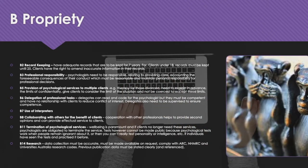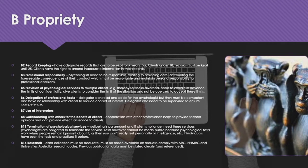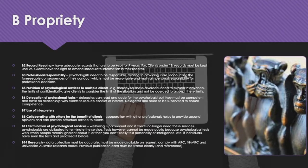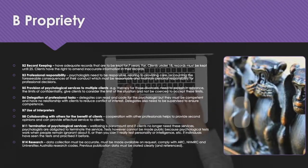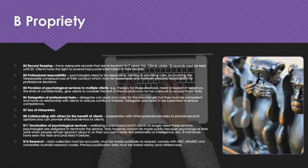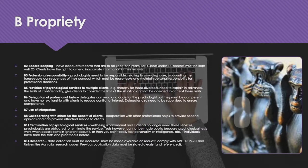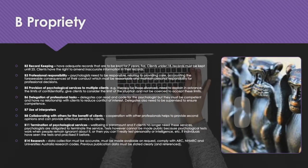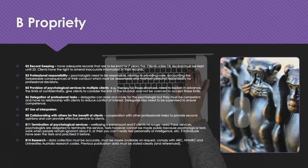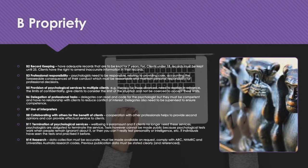B5 covers Provision of Psychological Services to Multiple Clients — for example, therapy for those who are divorced. Psychologists need to explain in advance the limits of confidentiality and give clients the opportunity to consider the limits of the situation without being coerced to accept these limitations. B6 is Delegation of Provisional Tasks — delegates can read and code for the psychologist, but they must be competent and have no relationship with clients to reduce conflict of interest, and they must be supervised to ensure competence. B7 covers the Use of Interpreters, and B8 covers Collaborating with Others for the Benefit of Clients.